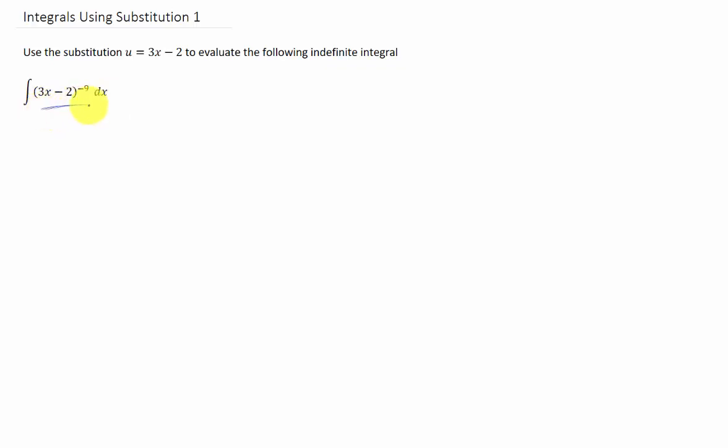We don't have a good way to evaluate this integral directly, but we know that we can integrate some variable to the negative 9th power. So what we do is we replace this 3x minus 2 with some other variable. Typically we call that u.